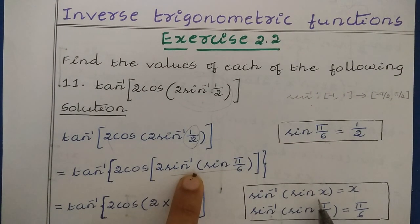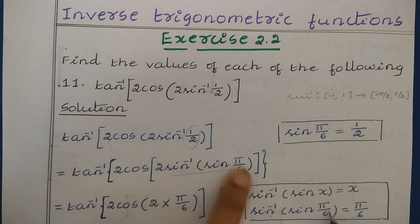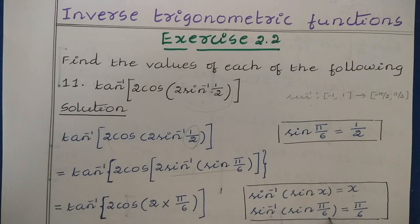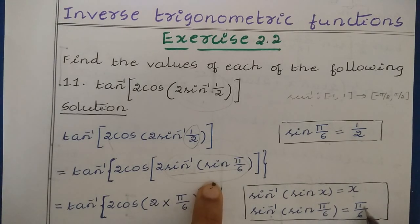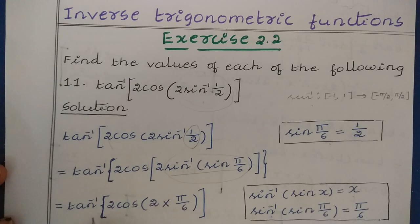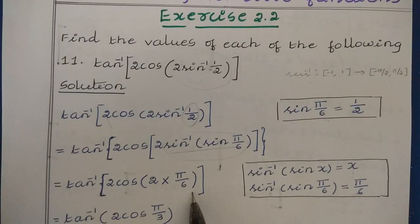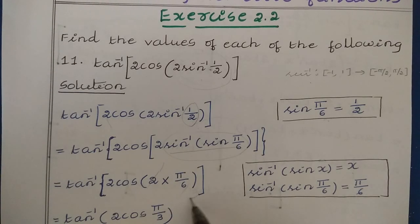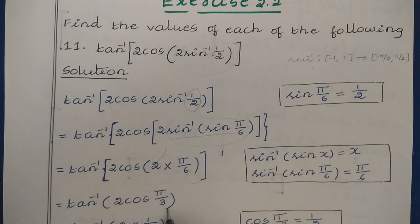Using the formula sin⁻¹(sin x) = x, where x = π/6, the inner expression simplifies to π/6. So we get tan⁻¹(2 cos(2 × π/6)), and since 2 × π/6 = π/3, we now have tan⁻¹(2 cos(π/3)).